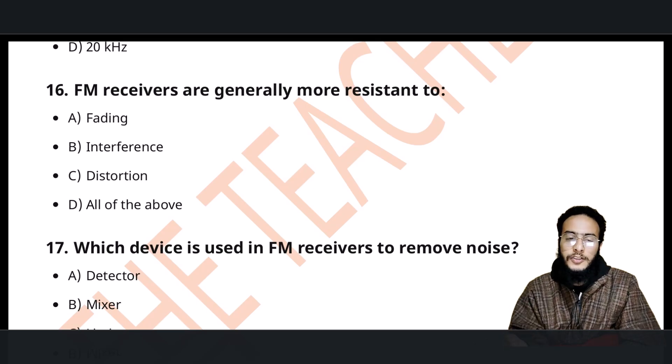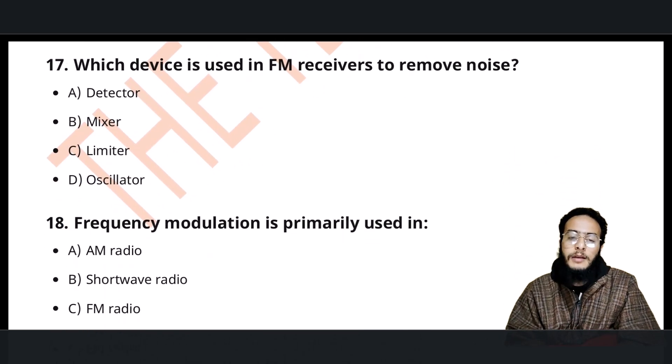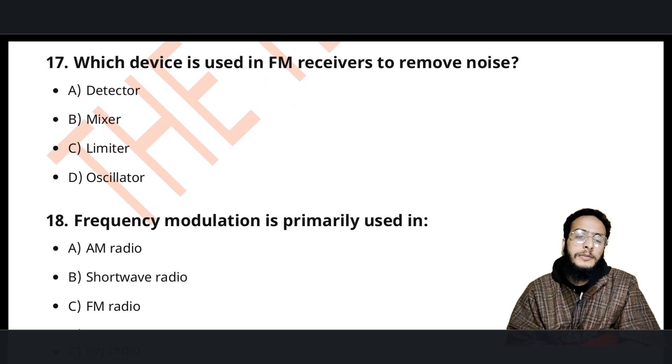FM receivers are generally more resistant to interference and distortion. That is why FM is preferred over AM. The device used to remove noise is the limiter.